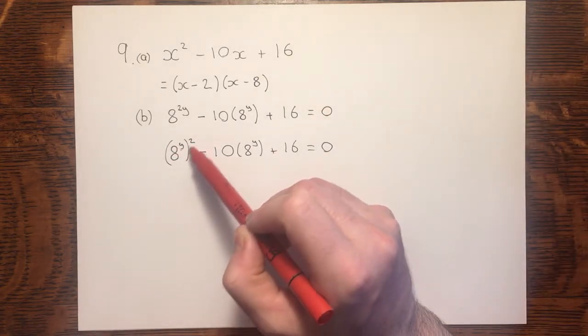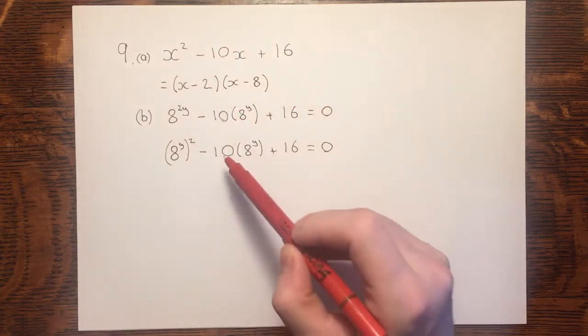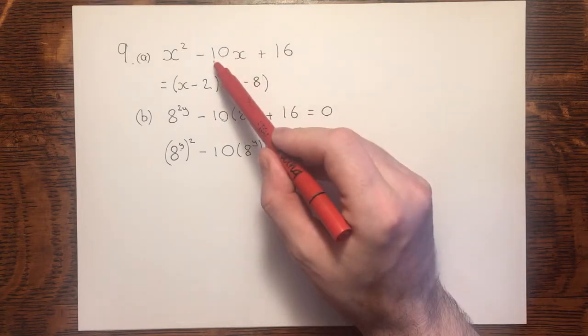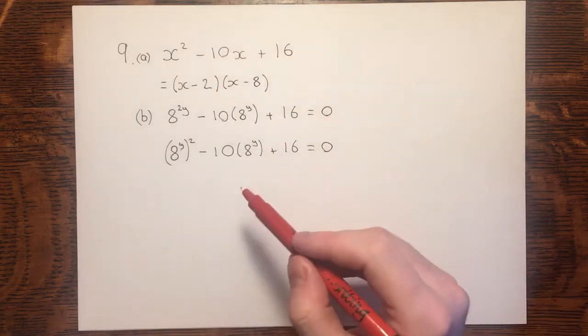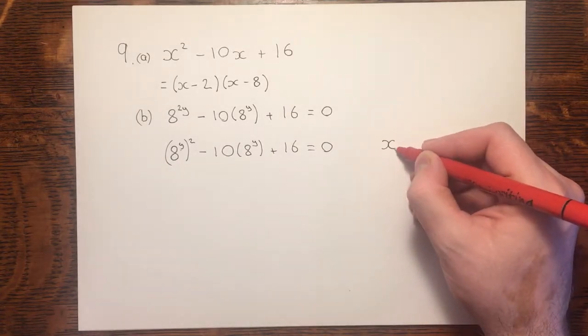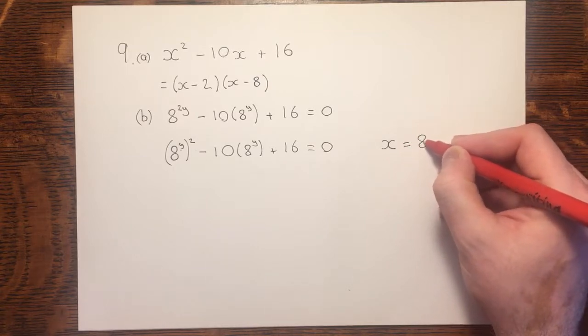Here we've got 8 to the power y squared. Here we have x squared. Here we have minus 10 times 8 to the power y. Here we have minus 10x, and 16. Effectively, we've got a comparison we can make between x being equal to 8 to the power y.